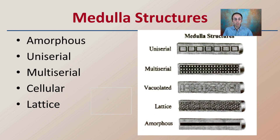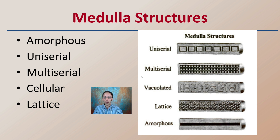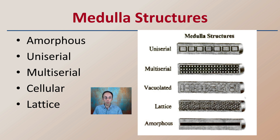There are different medulla structures: amorphous, uni-serial, multi-serial, acellular, or lattice. These include the amorphous shape, the lattice, the multi-serial, and the uni-serial — all very distinctive patterns, with examples of each to follow.